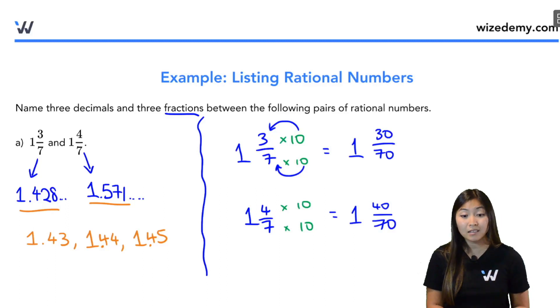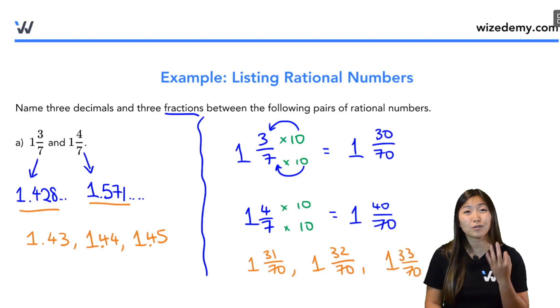So three fractions or three mixed numbers I guess that are between these would be 1 and 31 out of 70, 1 and 32 out of 70, and 1 and 33 out of 70. There's a lot more of these, these are just three examples.